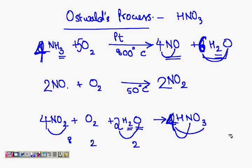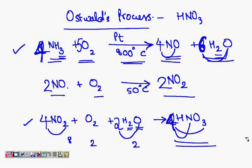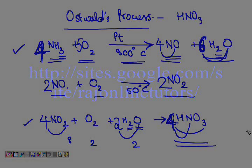So all the steps of the Ostwald's process in order to manufacture nitric acid. In the first step, ammonia is oxidized in presence of platinum at 800 degrees Celsius. This is catalytic oxidation. It produces nitric oxide and water. Nitric oxide is further oxidized to nitrogen dioxide. And in the last step, along with presence of oxygen molecule with water molecule, it combines to produce nitric oxide.